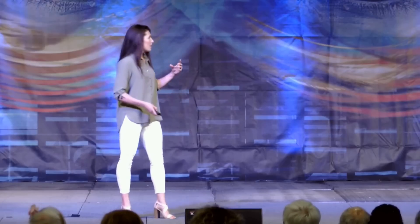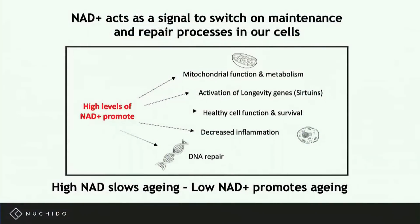When you're young and you've got really high levels of NAD, all of these repair and maintenance pathways are literally switched on to the max, making sure that your cells are all in good health. But as you get older and these NAD levels start to decrease, they start to get turned down — and this has been implicated in the reason that we get the symptoms of aging.